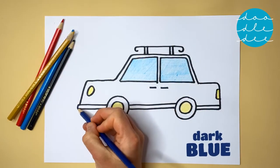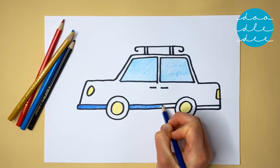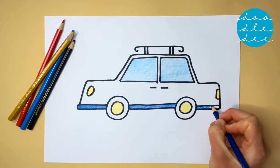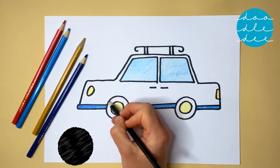Use dark blue for the rim around the bottom, and black for the wheels.